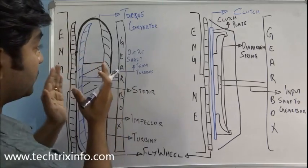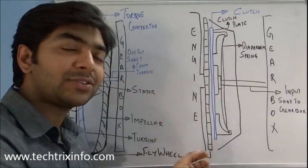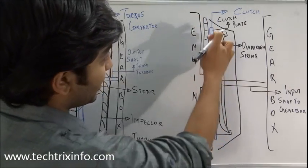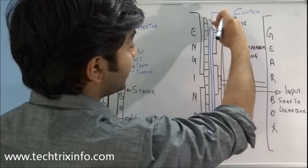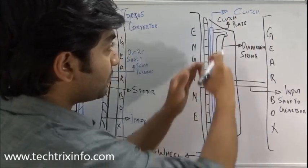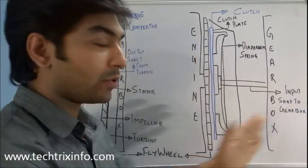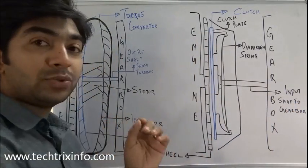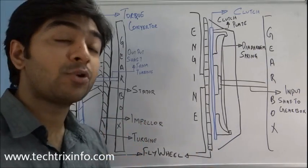The purpose of the torque converter is to take the drive from the engine and transmit it towards the gearbox. The purpose of the clutch is exactly the same — here we have the engine, the flywheel, and next to the flywheel we have the clutch. The clutch takes the drive from the engine towards the gearbox. Both are designed to do the same job but in a different way.